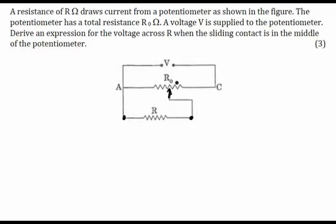Because it is in the middle, we can assume we can break it into two resistors, R0 by 2 and R0 by 2. The reason I broke it into two equal resistances is simple because resistance is nothing but Rho L by A.